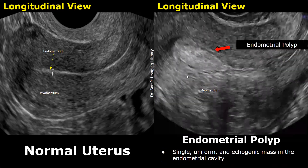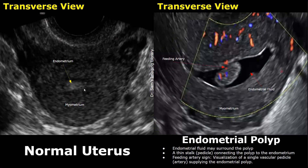This is another case of an endometrial polyp — we see a hyperechoic uniform mass occupying the endometrial cavity. Now we have transverse views of the uterus. This is the normal uterus in transverse plane, and here we have an endometrial polyp where the mass is surrounded by anechoic endometrial fluid.